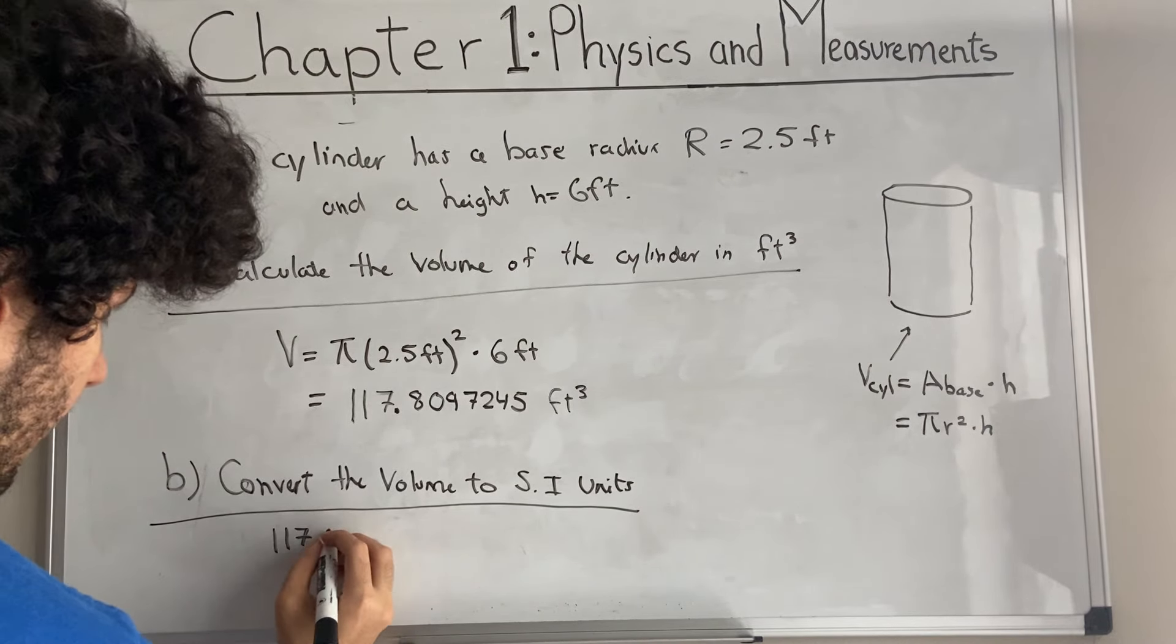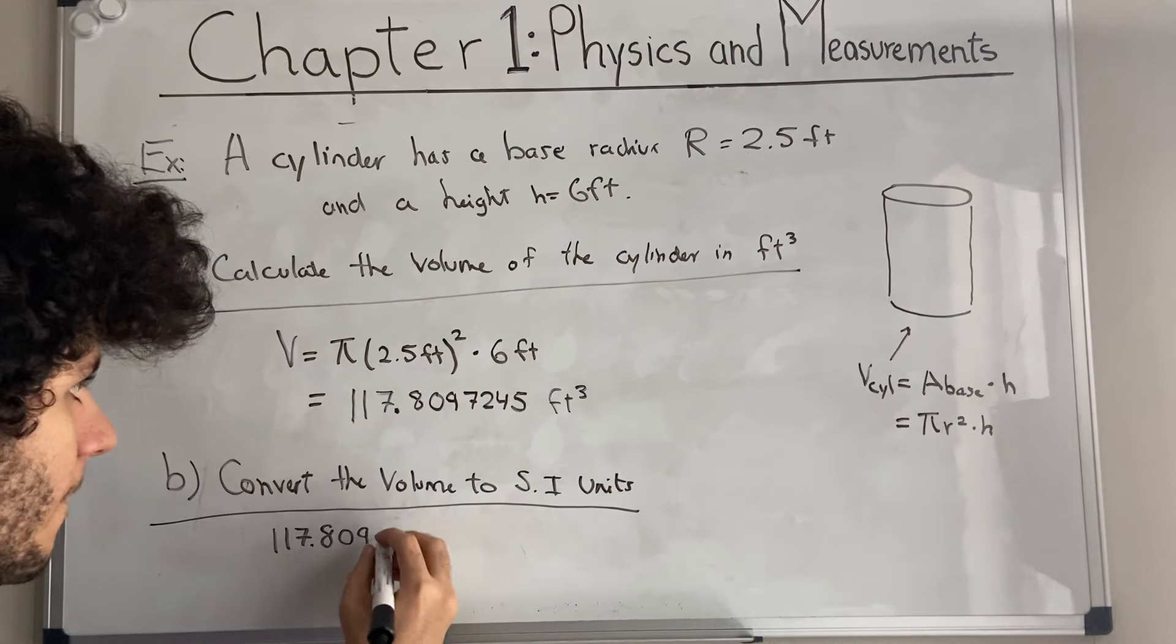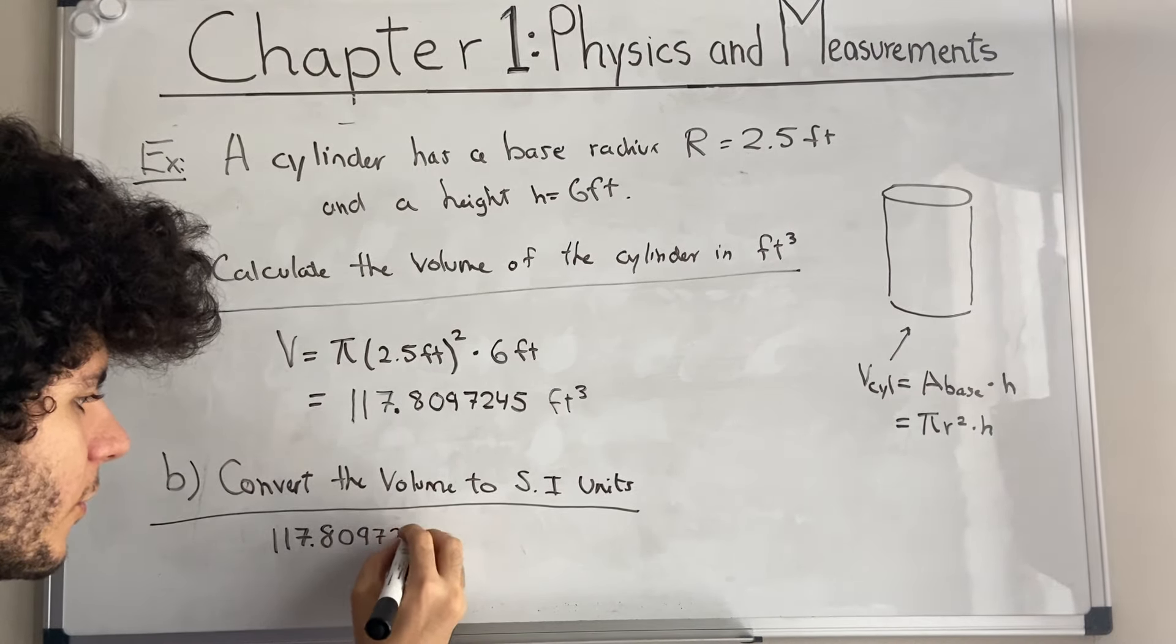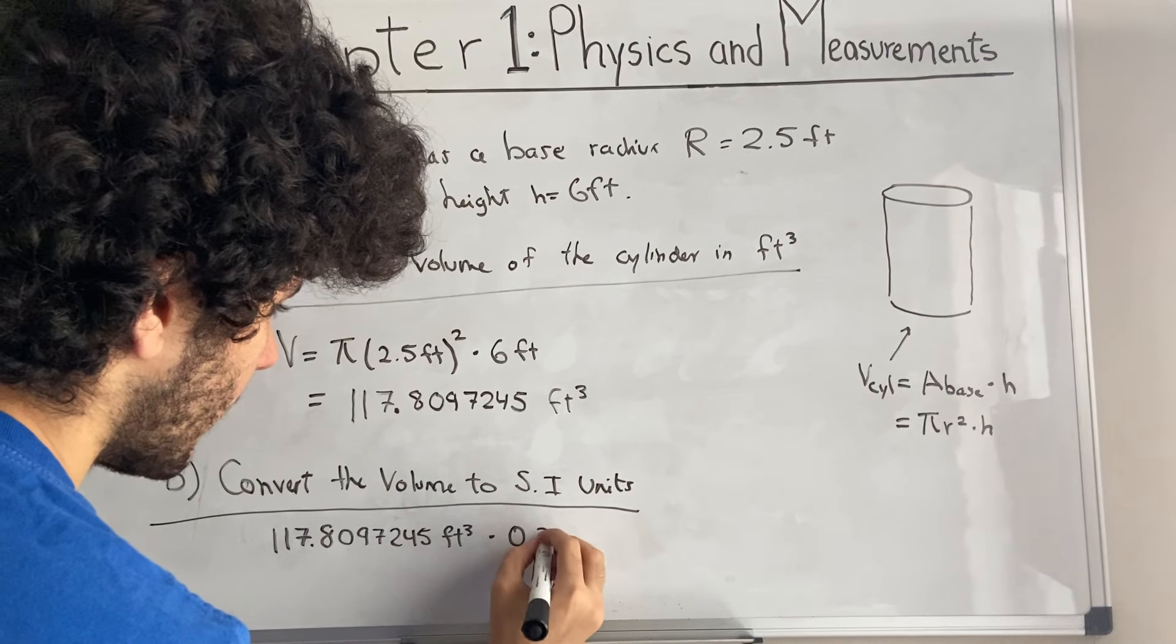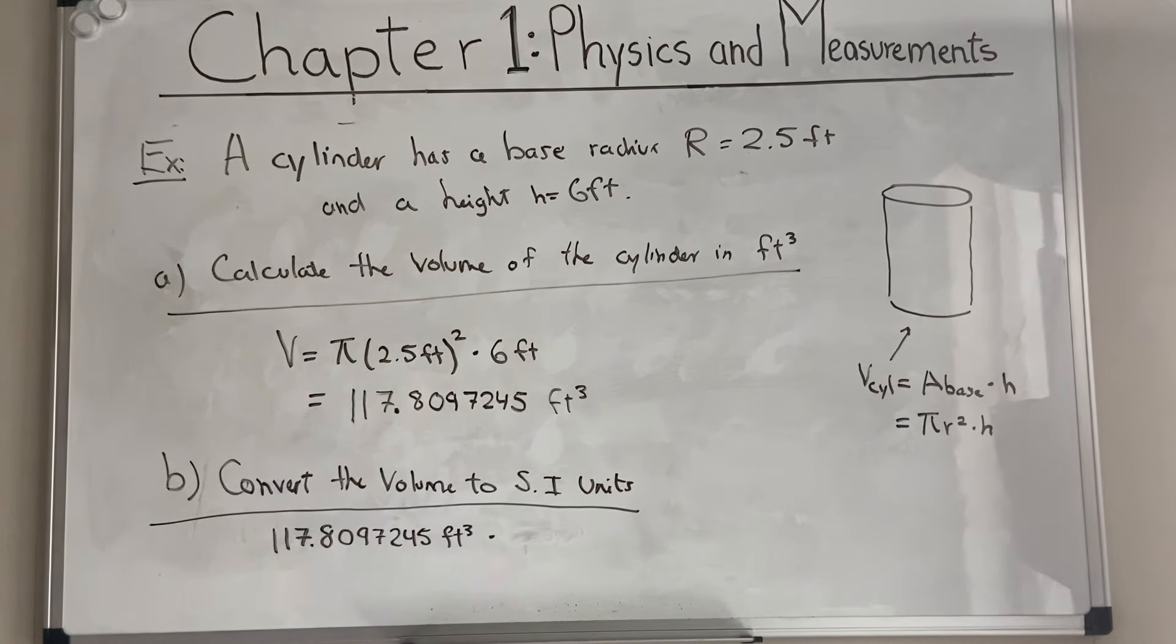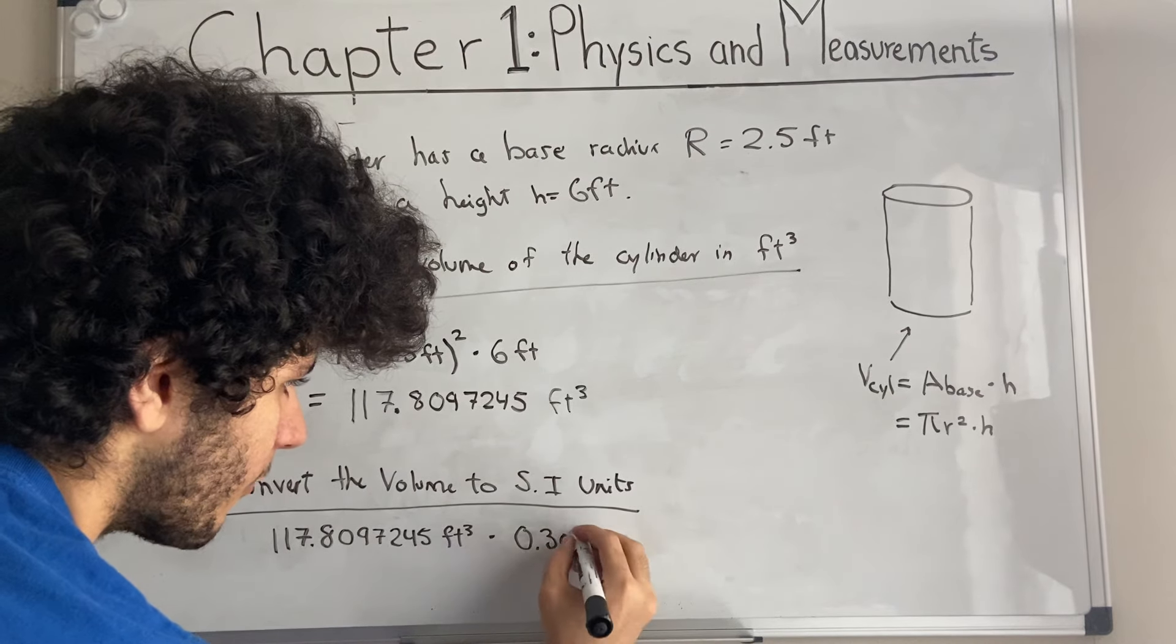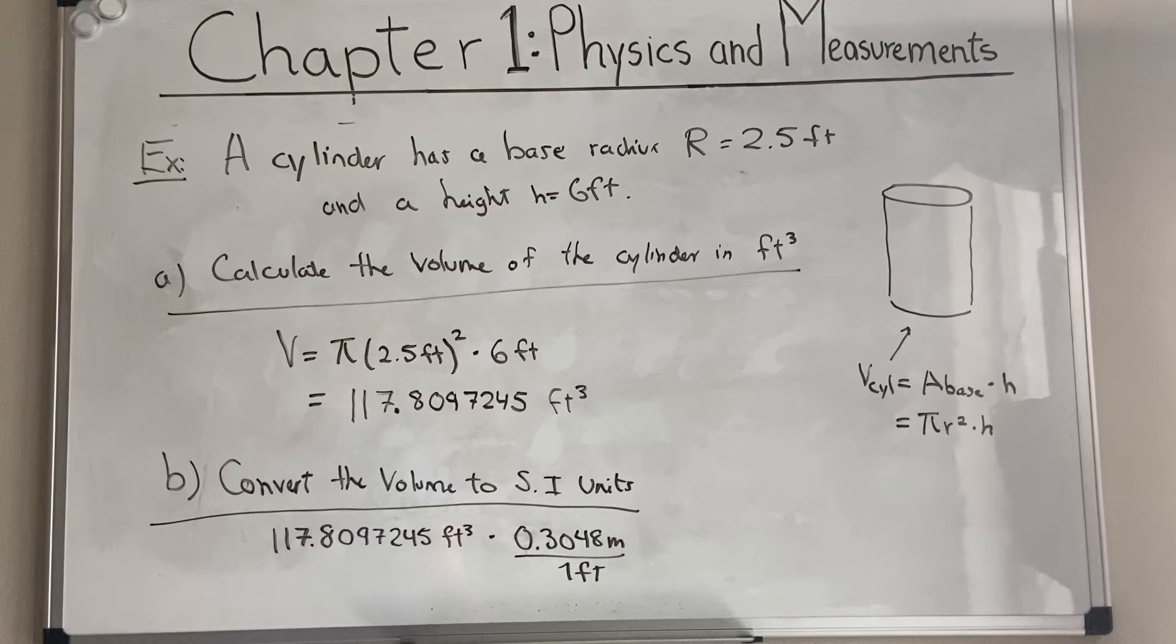So we take our result: 117.8097245 feet cubed times 0.3048 meters per foot. We want meters to be on top. And you might ask yourself, wait, Noah. This is feet cubed, and here we only have feet. So if we multiply these two fractions, considering that there's a one underneath here at the denominator, if we multiply, we're only going to have feet squared times meters, which is not what we want.